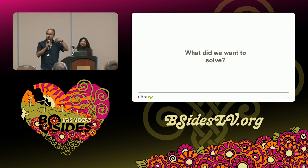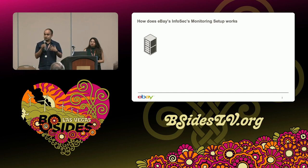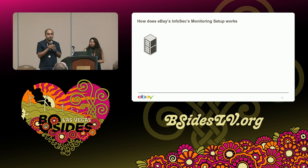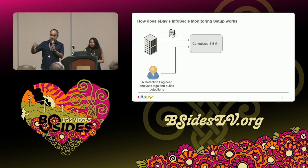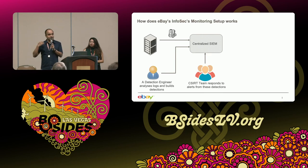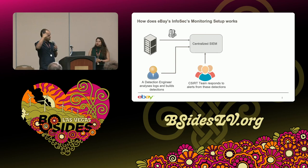Let me set some context on how we function — I'm pretty sure this is very similar to how your teams work. We have specialized teams at eBay with assets to monitor. Someone from detection engineering works with asset owners, does modeling on potential attacks, analyzes logging artifacts, works with a log onboarding team to get logs onto a centralized SIEM, writes security content, pushes it to production, and when something malicious happens, alerts are generated and our incident response team — AKA CSIRT — responds. We primarily use ServiceNow as a case management system, and all analysis and investigation is done on the centralized SIEM.